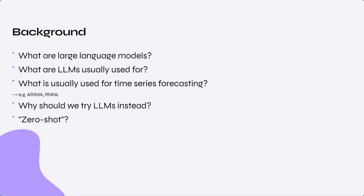What are Large Language Models? Large Language Models, or LLMs, are artificial intelligence systems designed to understand and generate human-like text based on the input they receive. These models are trained on large amounts of diverse textual data to learn pattern structures and nuances of human language. LLMs can be used for text generation, translation, question answering, text analysis, and so much more.